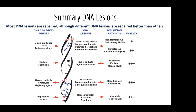These DNA repair pathways are why we don't just walk around with cancer every day. Some of these work better than others. The 'fidelity' column means those with more plus signs are more trustworthy. Nucleotide excision repair is a high-fidelity process, whereas non-homologous end joining — which fixes double strand breaks and crosslinks — is not that trustworthy and has a lot of errors.